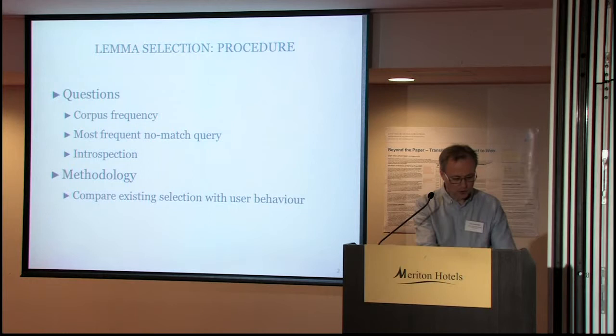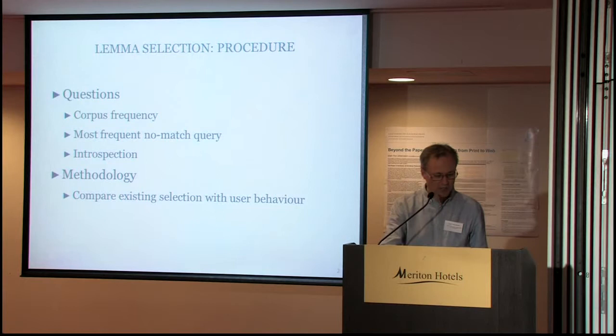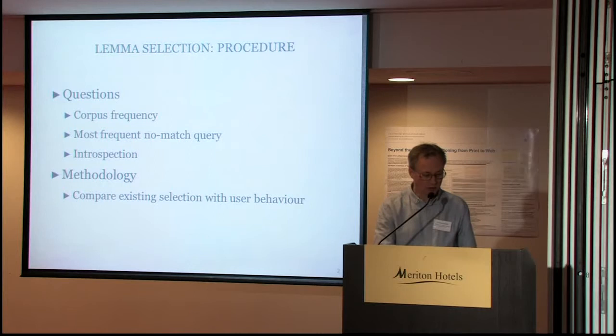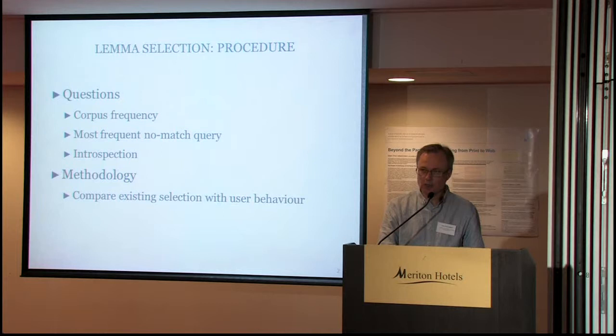If you approach the question of lemma selection from the outside, there are at least three ways of proceeding. You could continue with corpus frequency as the guiding criterion, which would be perfectly justified if your concerns are mainly with language documentation. However, if you're more interested in helping users solve their language problems, you should also look at the way they're actually looking up words and use this as a guiding principle. A third solution would be to combine the two and let the editors make a qualified selection using their common sense.